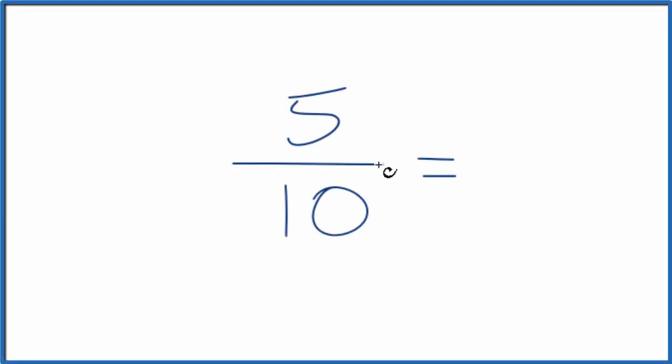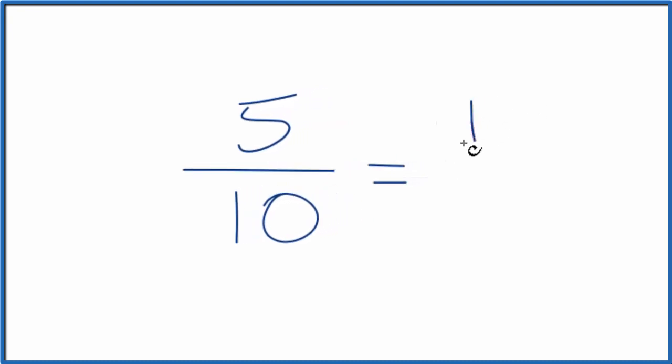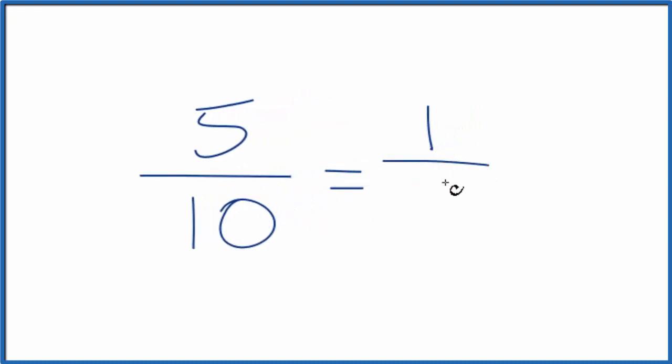Let's express the fraction 5 tenths as a decimal. Before we even do that, we can simplify 5 tenths. 5 goes into 5 one time, 5 goes into 10 two times. So 5 tenths, that's the same as 1 half. They are equivalent fractions.